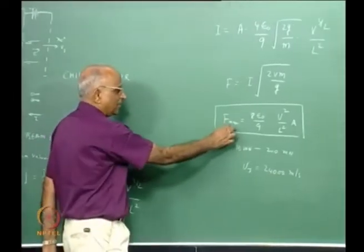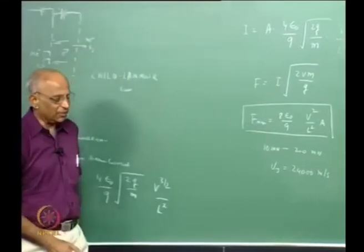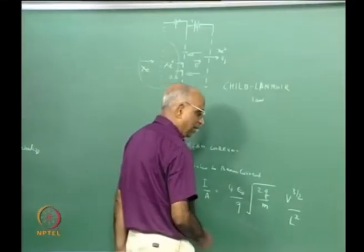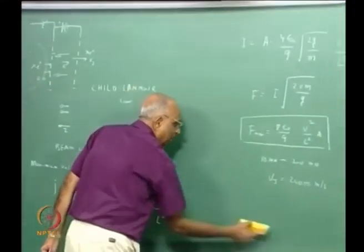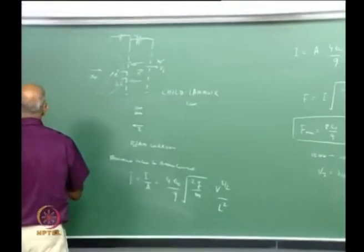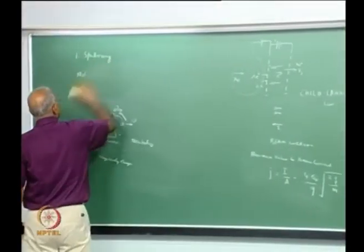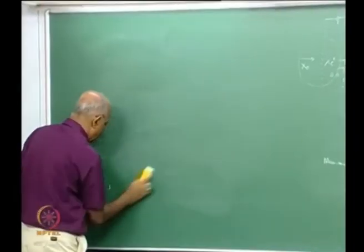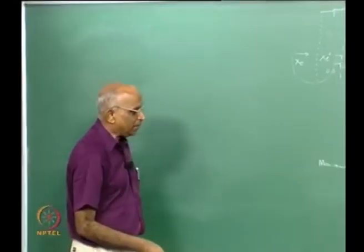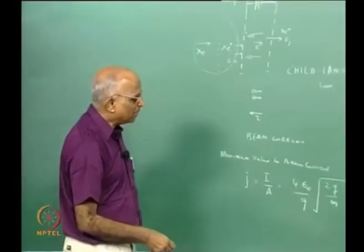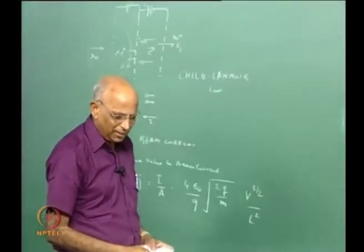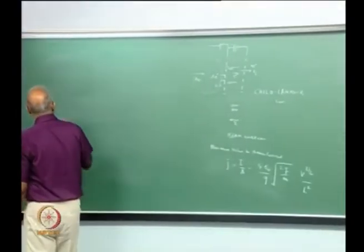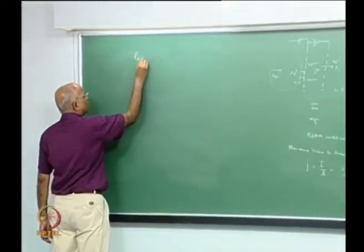This is all about ion thrusters — the gridded ion thruster and the radio frequency ion thruster. It has been flown in several missions and is a strong contender. In India also we are developing ion thrusters. But something which took the community by storm was a different approach taken by the Russians — looking at the problem in a slightly different way.